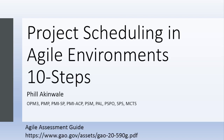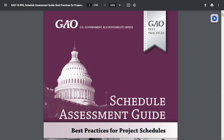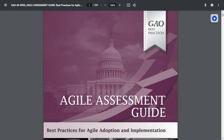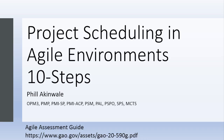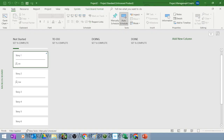Project Scheduling in Agile Environments — 10 Steps. In this session, we'll take a look at two documents: the Schedule Assessment Guide from the U.S. Government, and another document known as the Agile Assessment Guide. I'm going to put these together for you in a comprehensive way such that by the time we're done, you will have a much better idea of how to schedule in an Agile environment. So let's jump straight into a standard tool like Microsoft Project — it will amaze you that it doesn't look exactly like it did years ago. They've made considerations for scheduling in an Agile environment.